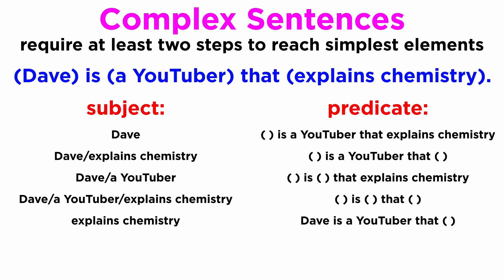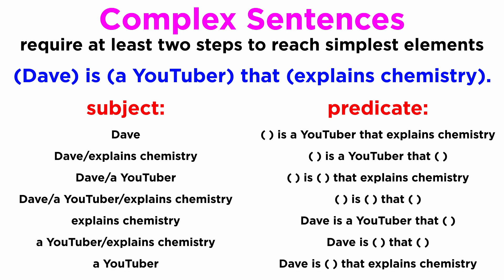Five, explains chemistry as a subject, and Dave is a YouTuber that () as a predicate. Six, a YouTuber and explains chemistry as subjects, and Dave is () that () as a predicate. And seven, a YouTuber as subject, and Dave is () that explains chemistry as the predicate.